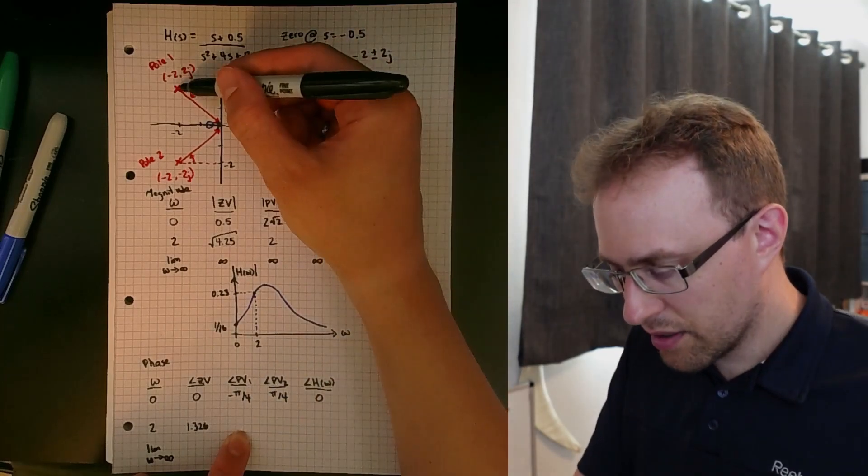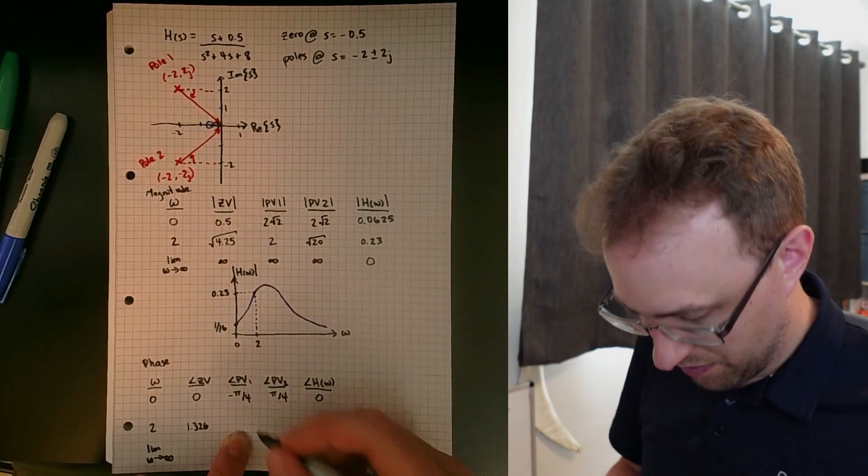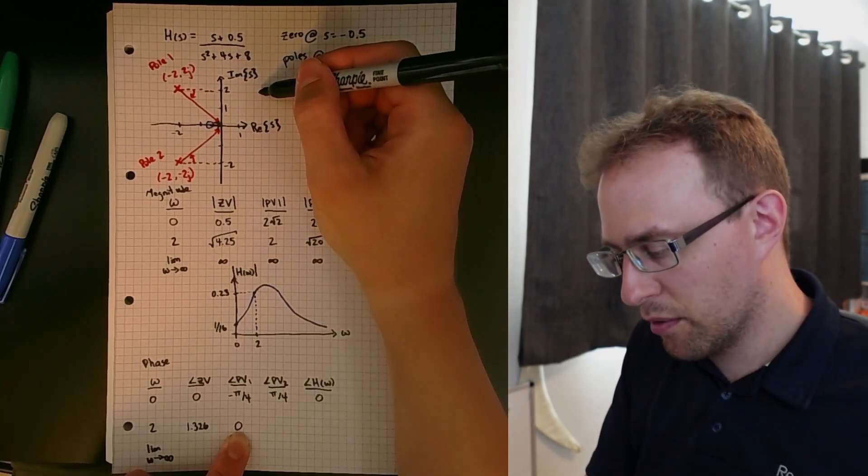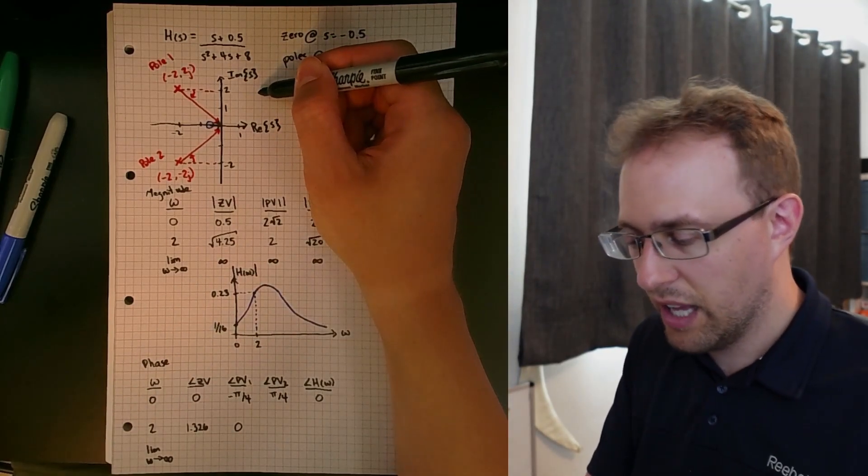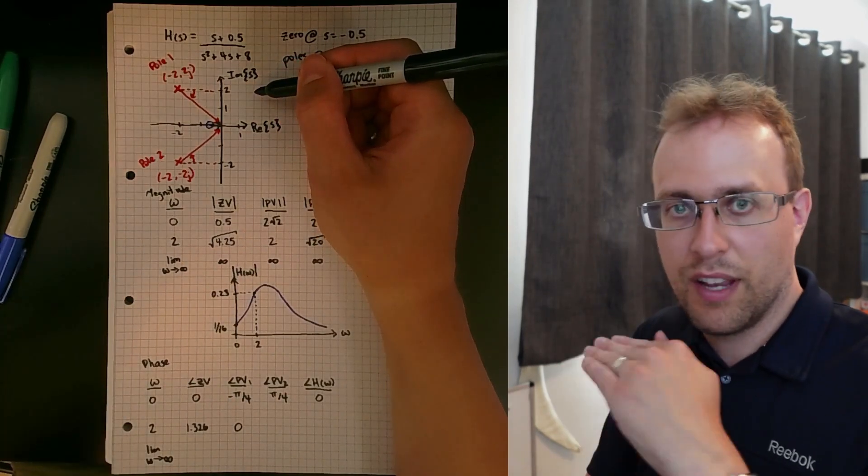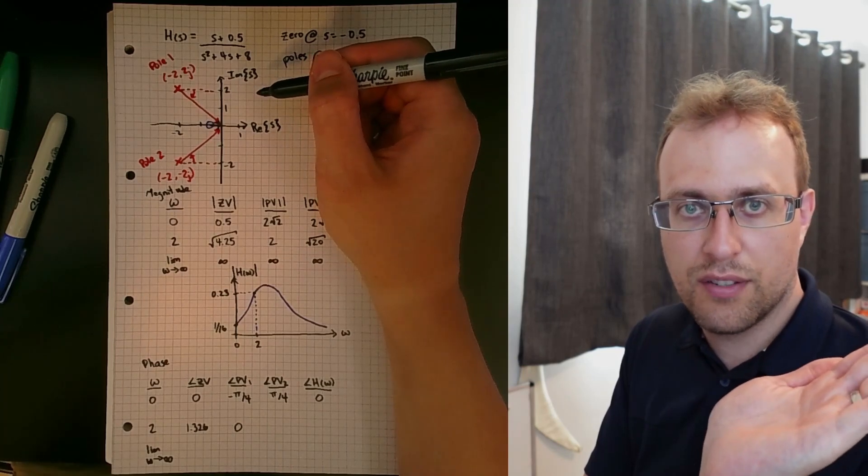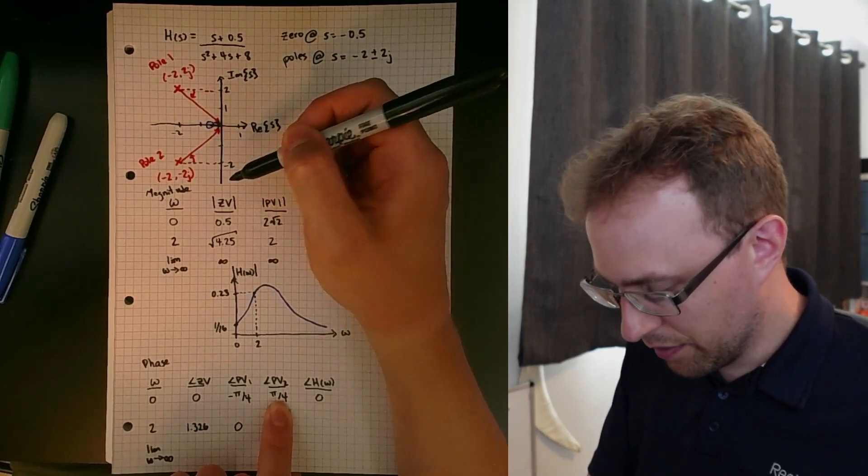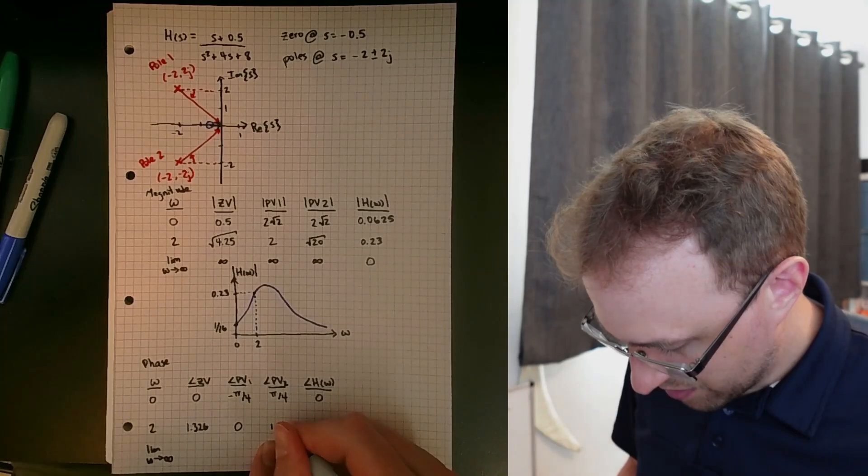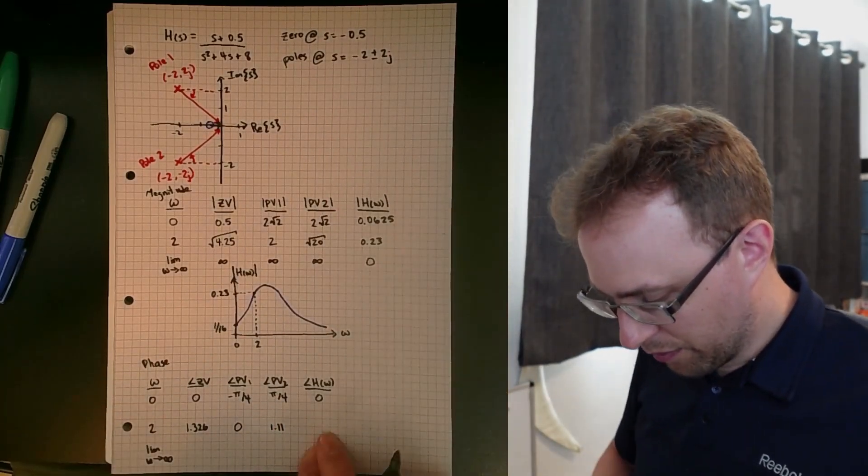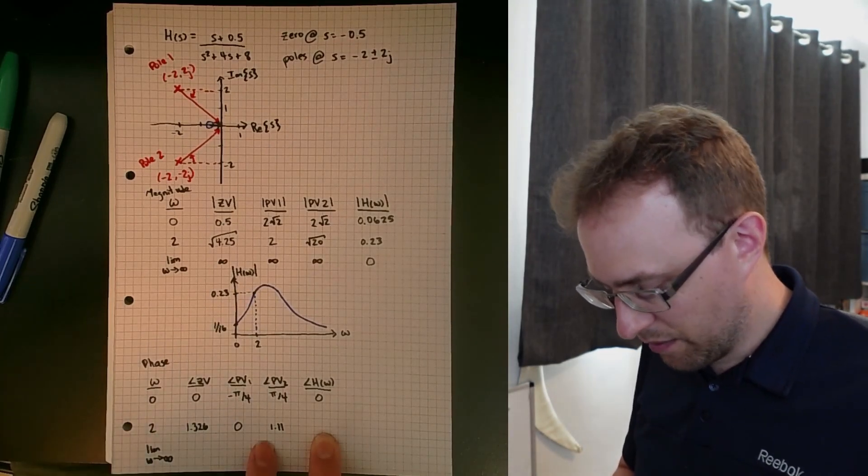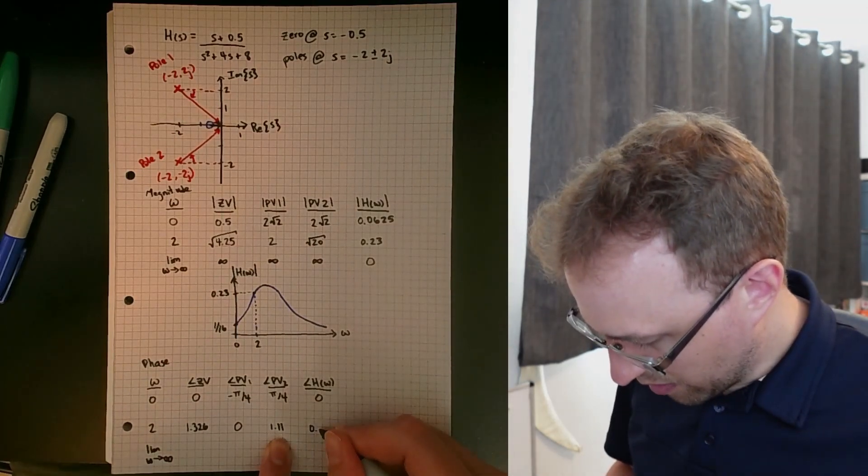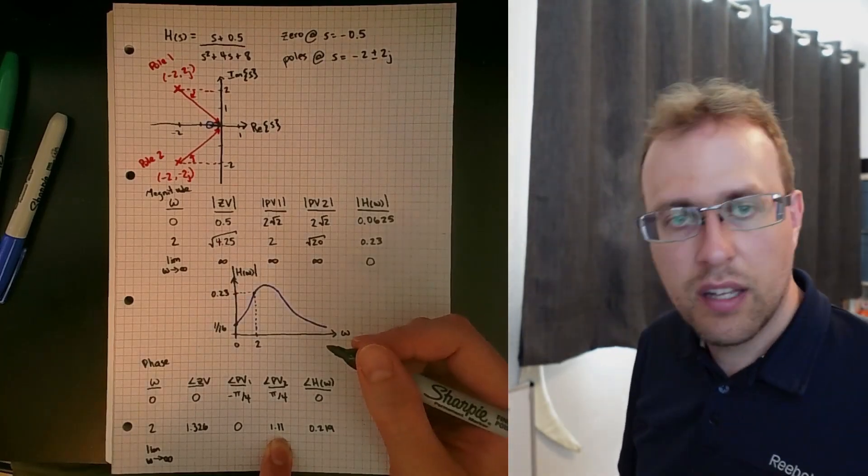For pole vector 1, this is going to be a vector that's now horizontal, so this one's going to have a phase of zero associated with it. For pole vector 2, we can do an arctan of 4 over 2 and that works out to being 1.11 radians. For the overall phase, we take the phases of the zeros, subtract the phases of the poles. So here we get 1.326 minus 1.11, which gets us about 0.219 radians.